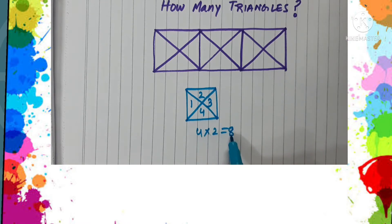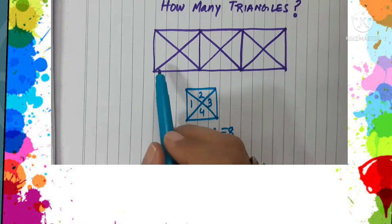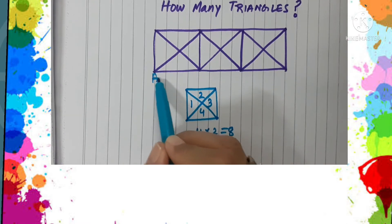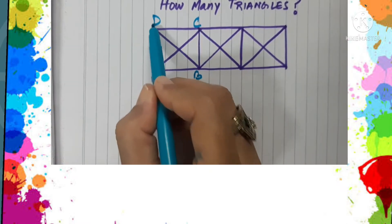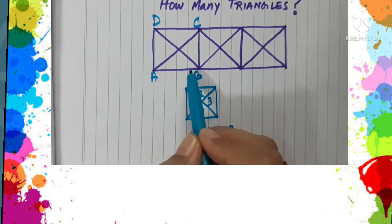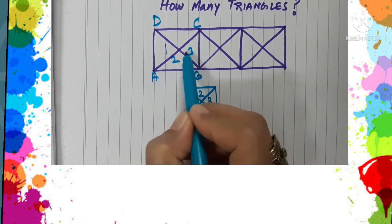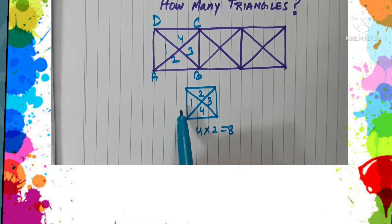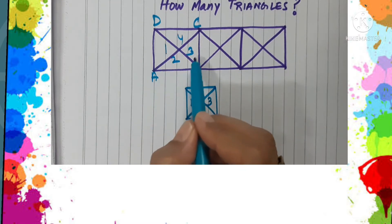Now you see that here in this figure, let us name the squares. So ABCD is one square which is divided into 4 parts by the diagonals, so there will be 8 triangles.